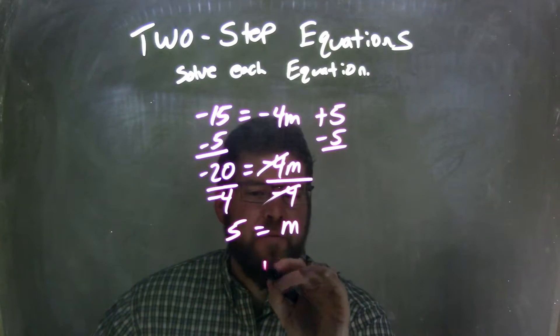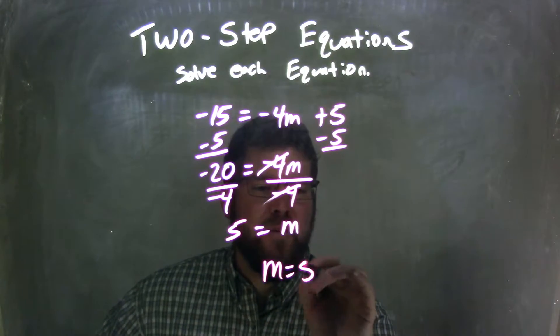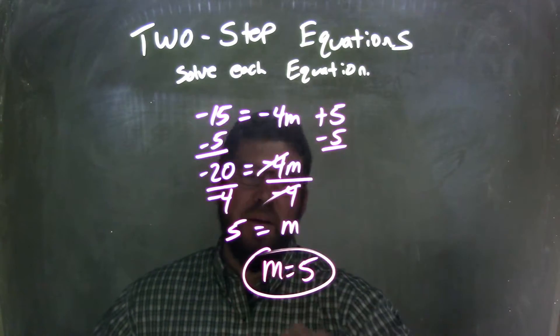Now, let's rearrange it, put m first, make it look nicer, and so we have a final answer of m equals 5.